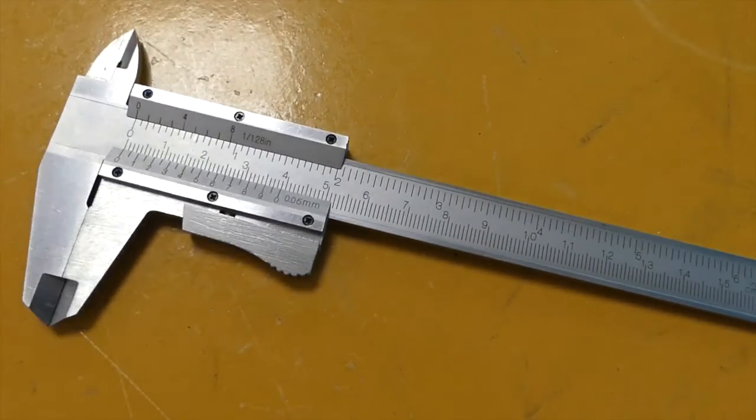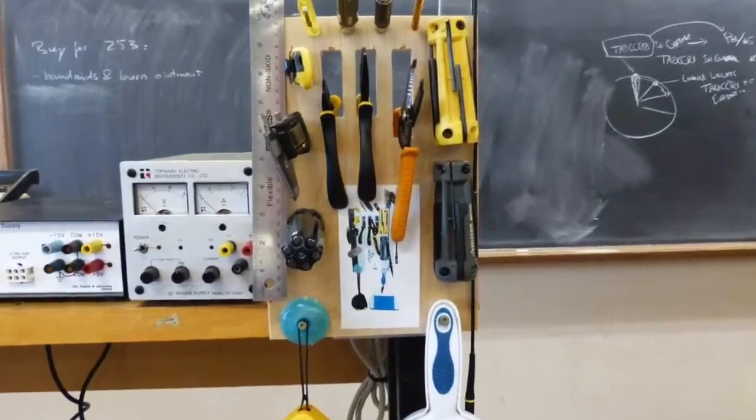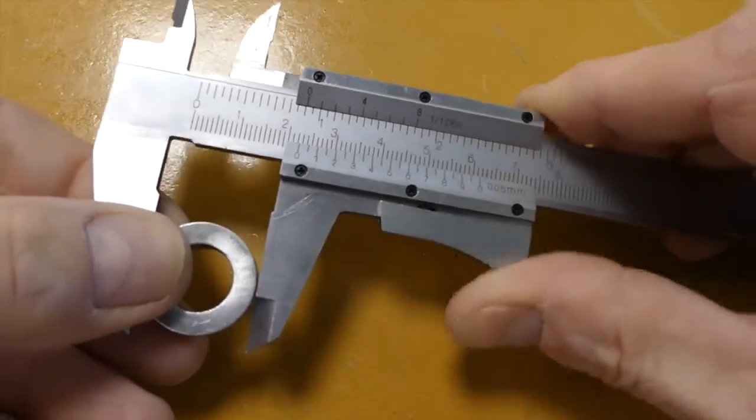Every bench has metric vernier calipers on its tool wall. When you use them to measure something, it works like this.